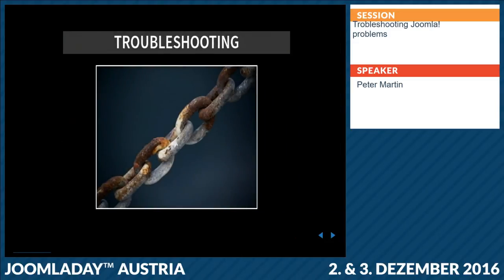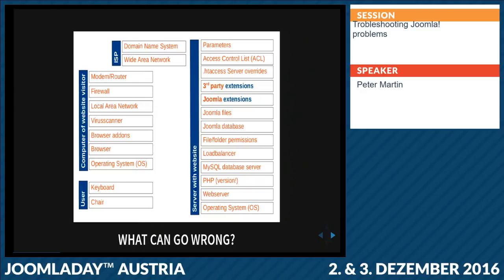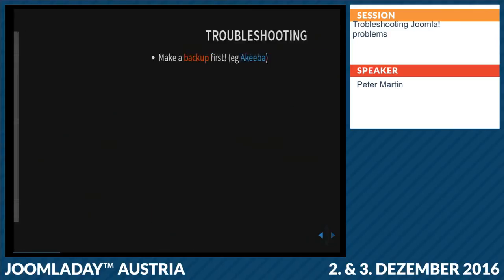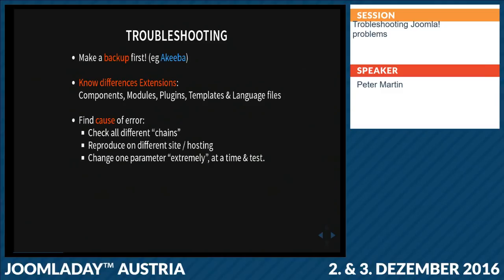First of all, troubleshooting in general. With Joomla, everything can go wrong: things on the web server and website itself, things on the computer of the person, and of course sometimes DNS things. When you want to find solutions, check everything. When you have problems, first make a backup — especially with Akeeba. You have to know the differences between all the different extensions to find the problem, check all the different changes, and try to reproduce the error on another server, like your local machine.